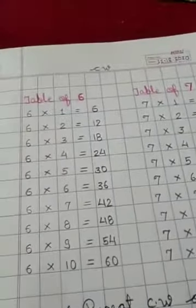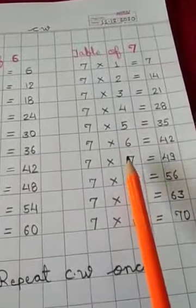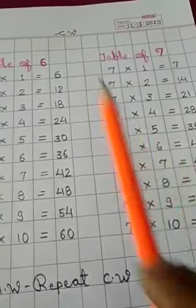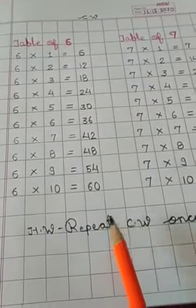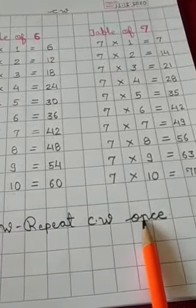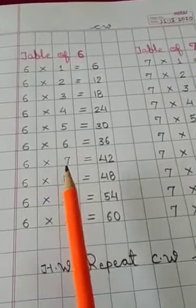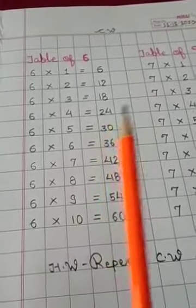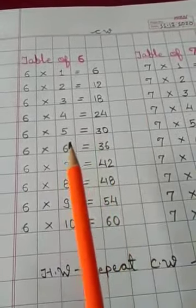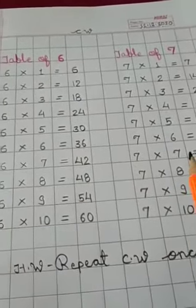Okay. So, this is your table of 6 and table of 7. This is your today's classwork. And your homework is repeat CW once. Means, in next page, you have to write, you have to learn. First learn and then write table of 6 and 7 one more time as a homework.